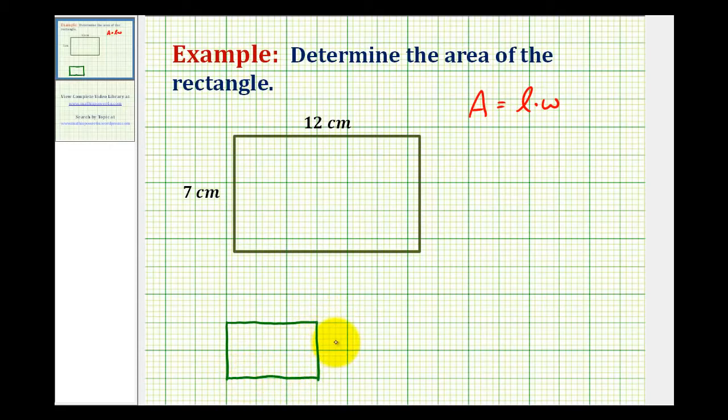If this side has a length of two units, and this side has a length of three units, and if we wanted to figure out how many squares would fit inside this rectangle, we could divide this into square units like this, this, and this. Now we can visually see that the area of this rectangle would be six square units.